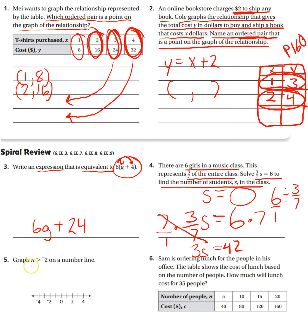Number five. Graph N is greater than negative two on the number line. So I know I'm going to put a circle at negative two. There's no equal sign, so it's going to be an open circle. And N has to be bigger. So if I want bigger, I need to go to the right. So it's going to go to the right and continue on forever. So I'm done with that.